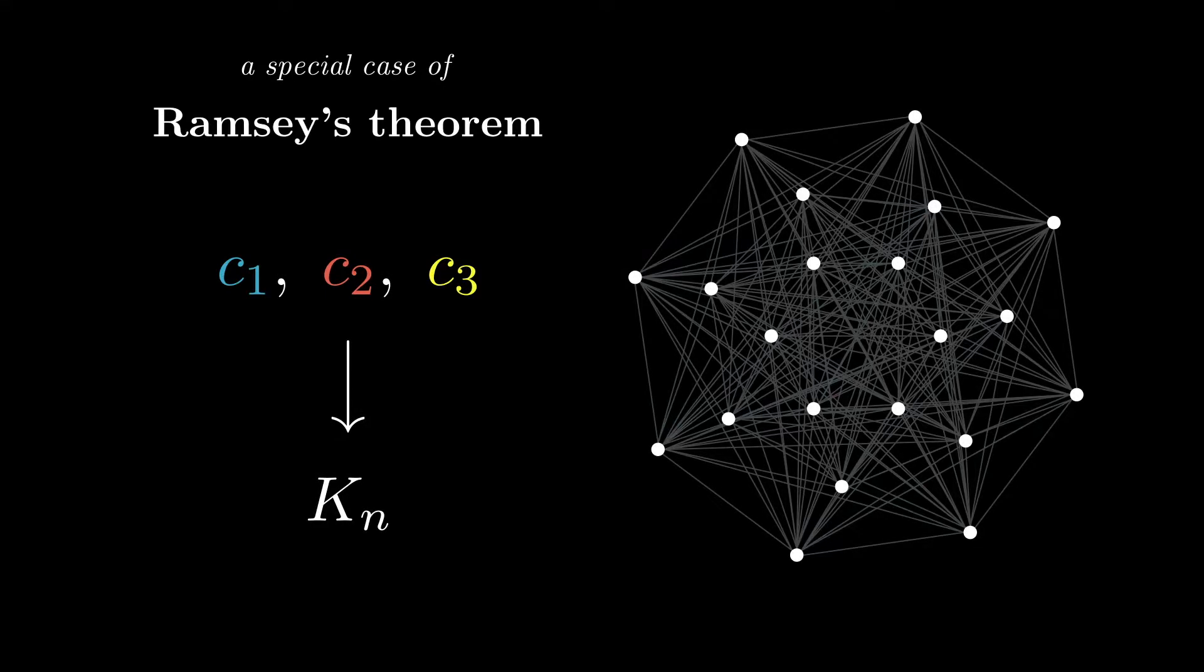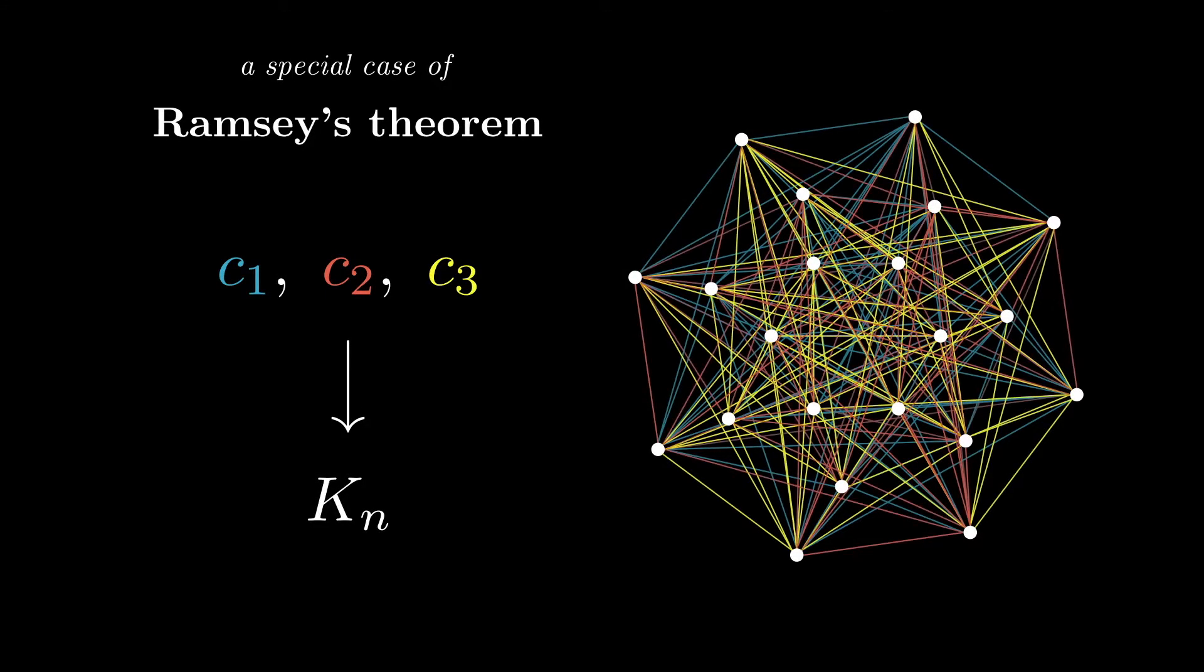A special case of a famous result in graph theory, Ramsey's theorem, says the following. If you choose a certain number of colours, then there will always be a complete graph kn which, no matter how you colour its edges using those colours, will result in a monochromatic triangle somewhere, meaning a triangle where all three edges have the same colour. Of course, this implies colourings of complete graphs larger than this one will also inevitably contain monochromatic triangles.